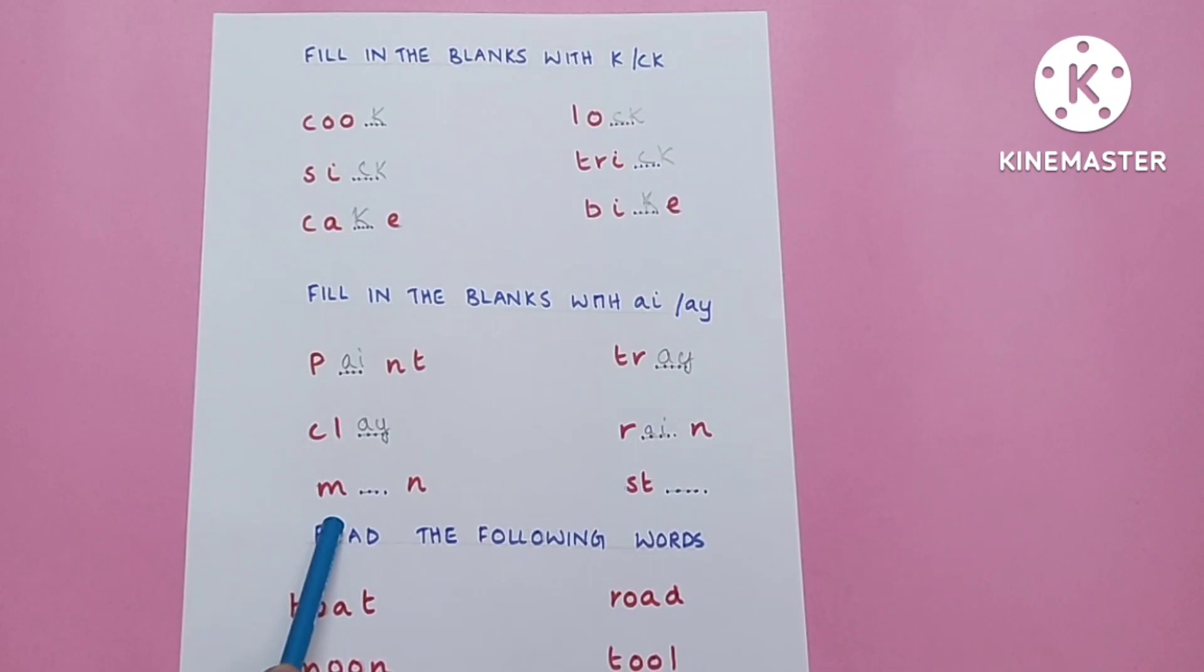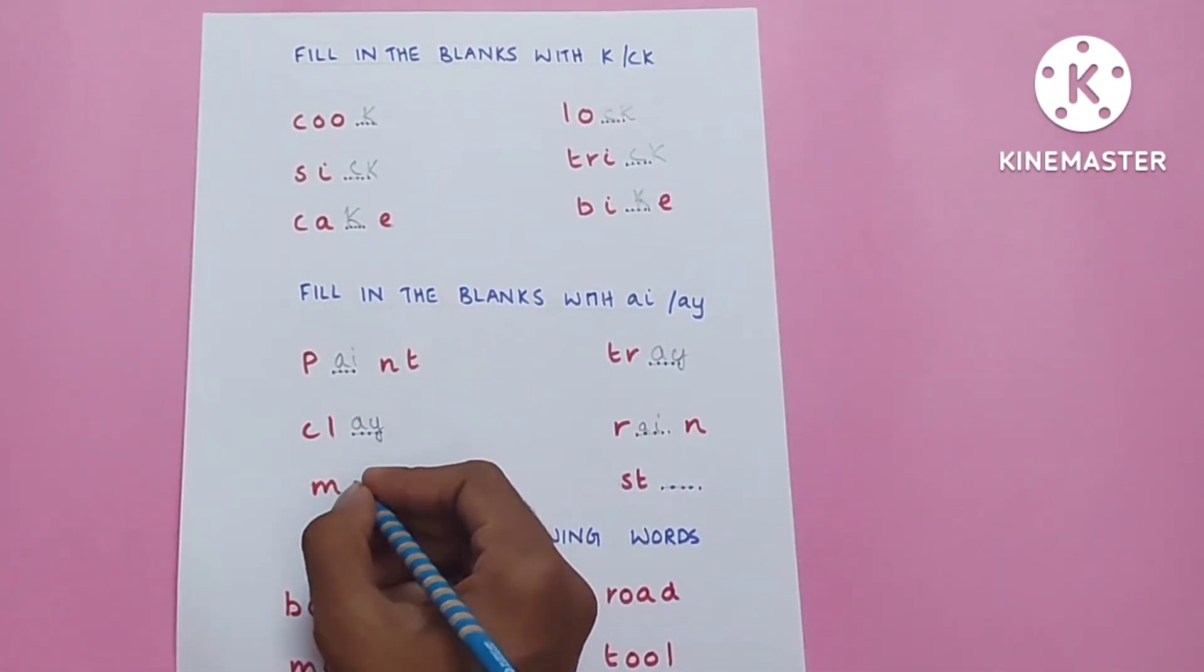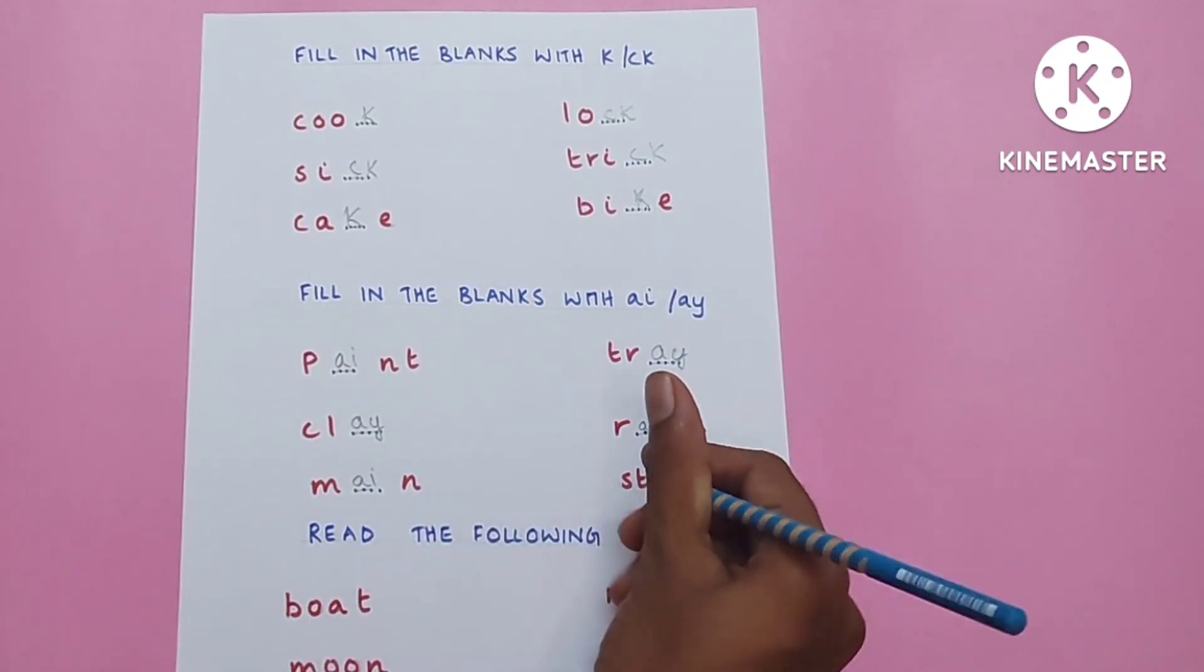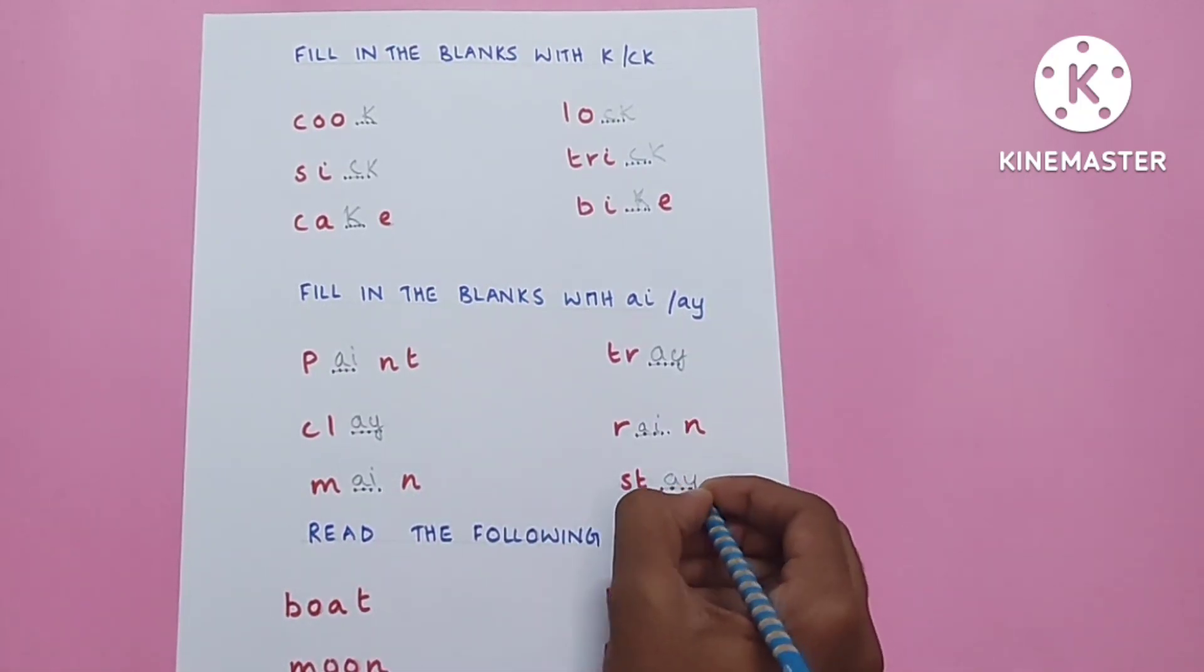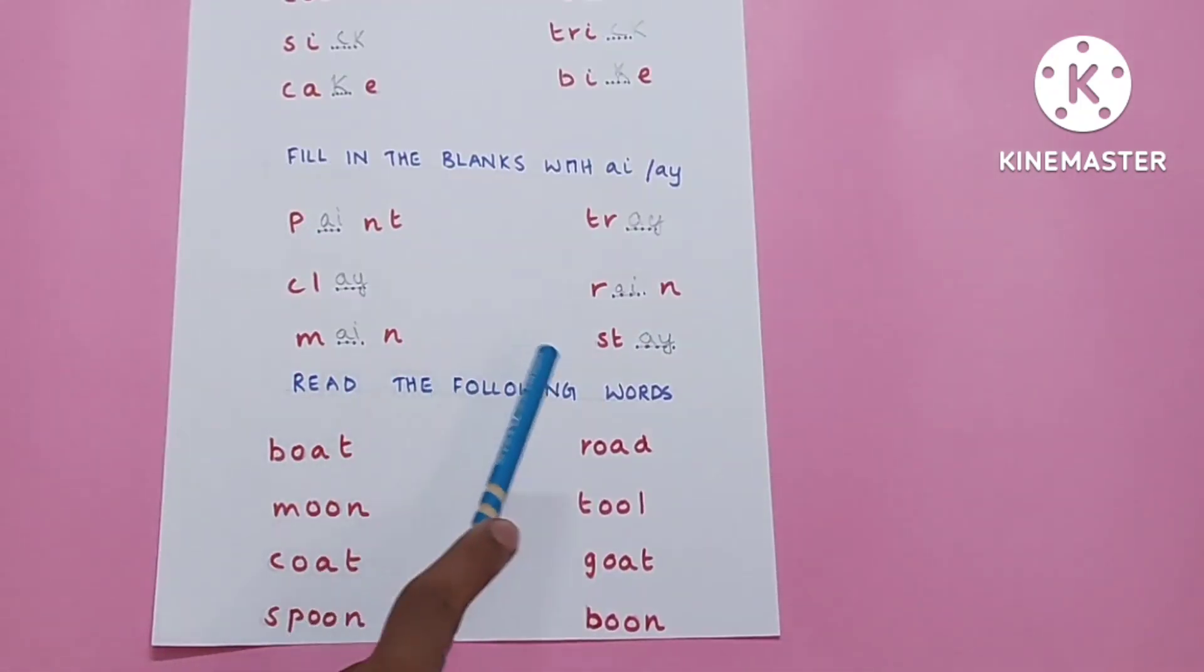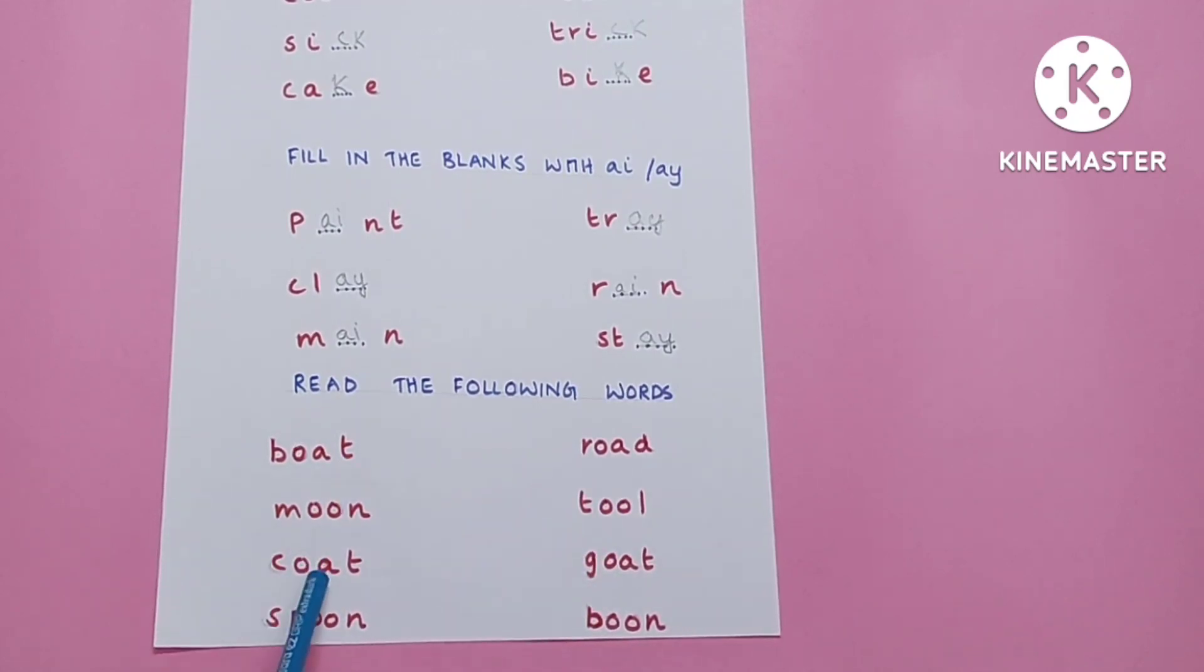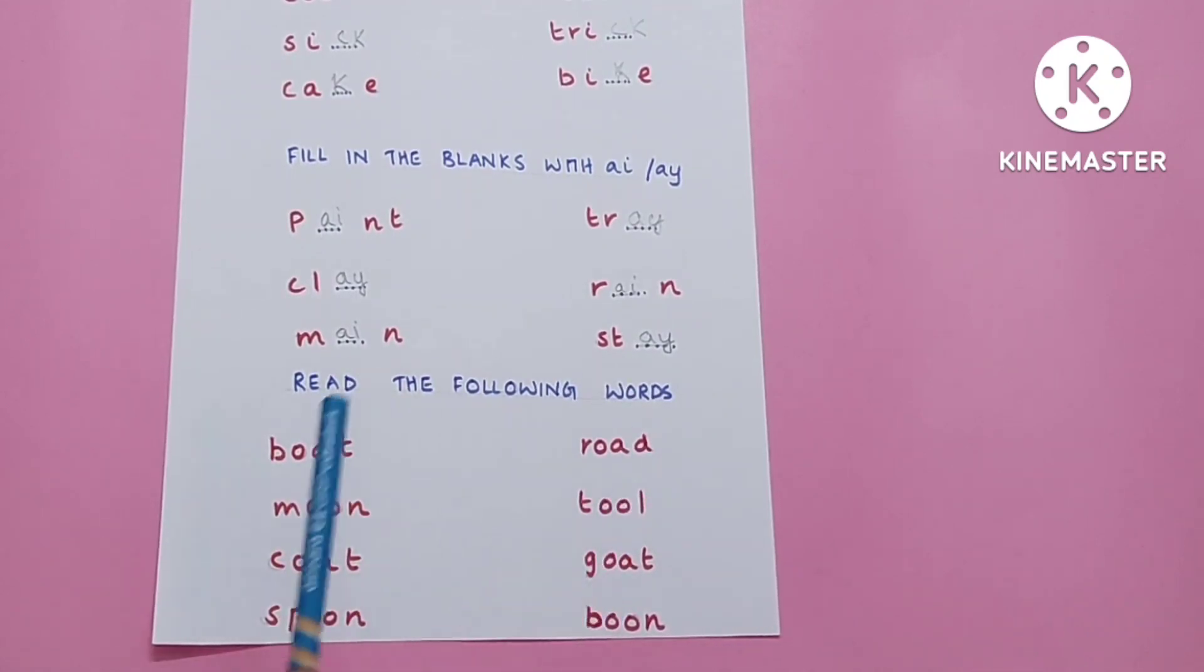Mean, AI. Stay, AY. Read the following words: boat, road, moon, tool, coat, goat, spoon, bone.